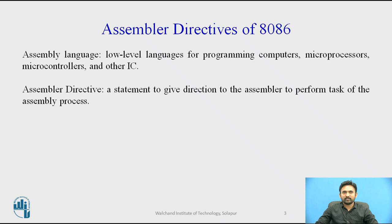An assembler directive is a statement to give direction to the assembler to perform some task of the assembly process, and it controls the organization of the program. It also provides necessary information to the assembler to understand assembly language programming and generate necessary machine code, indicating how an operand or a section of the program is to be processed by the assembler.